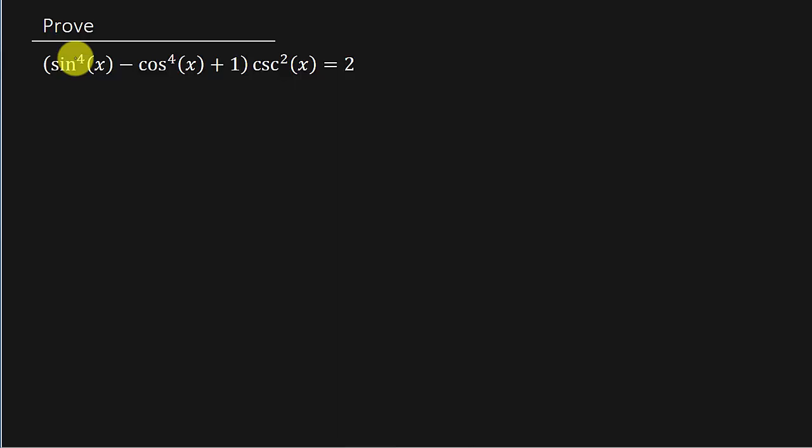So I've got sine to the fourth x minus cosine to the fourth x plus 1 times cosecant squared x. Let's see if we can somehow get that to a 2.